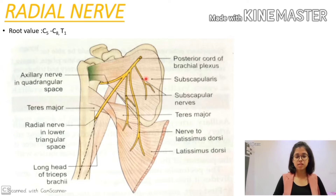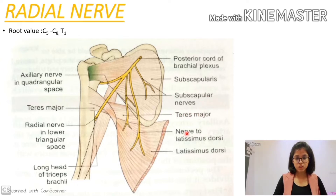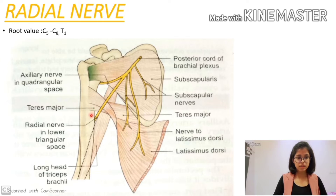There are three muscles that form the posterior wall of the axilla: first is subscapularis, next is teres major, and the last one is latissimus dorsi. The nerve lies against these three muscles and then it enters the lower triangular space.